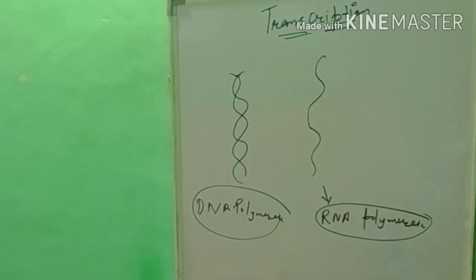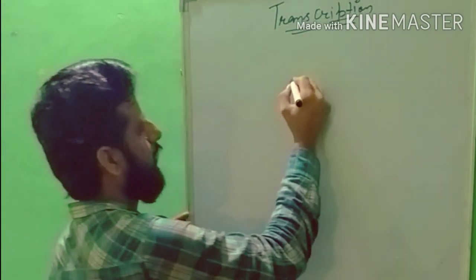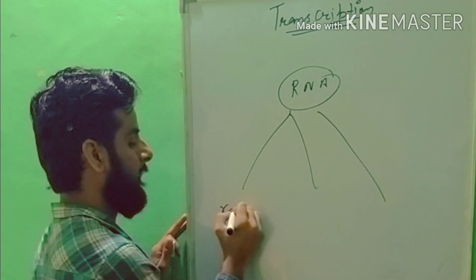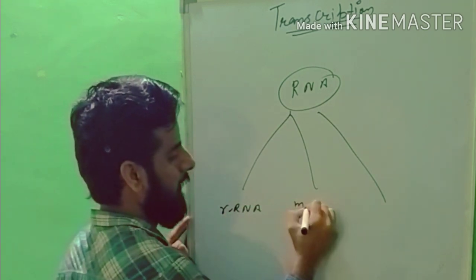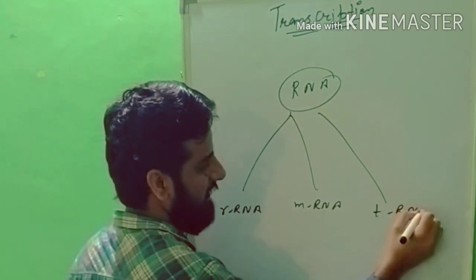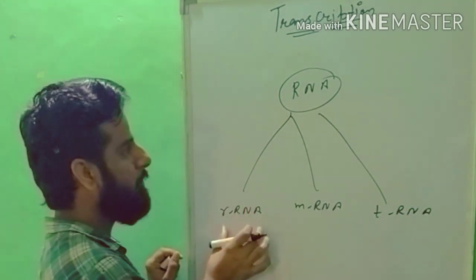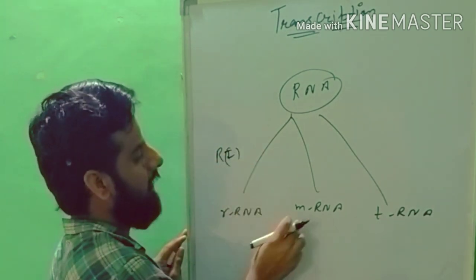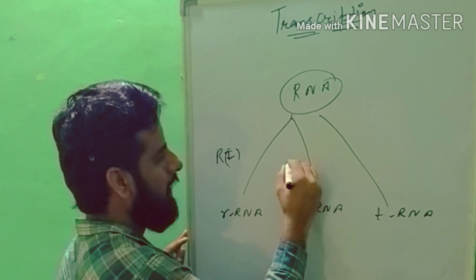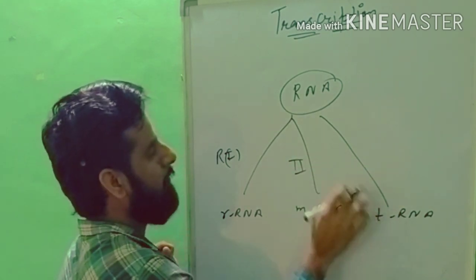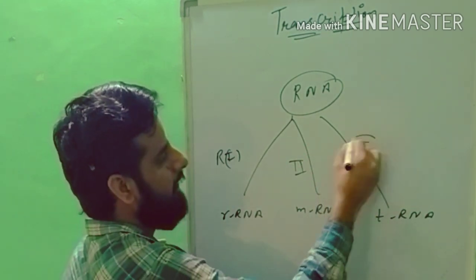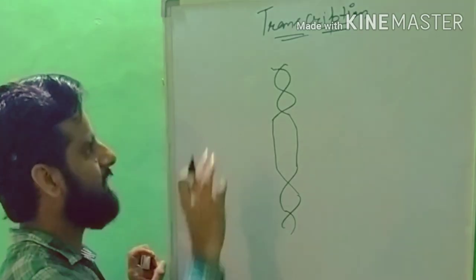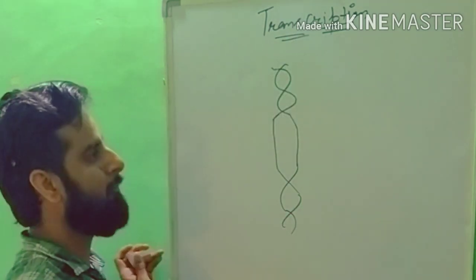There are three categories of RNA Polymerase. If rRNA is made, then RNA Polymerase I is used. If mRNA is made, then RNA Polymerase II is used. If tRNA is made, then RNA Polymerase III is used. Now we will study the mechanism of transcription.